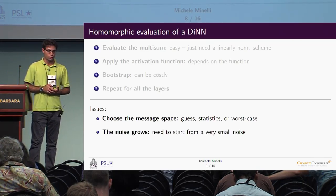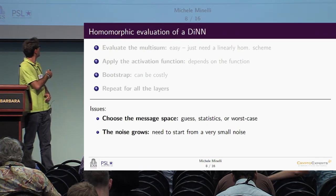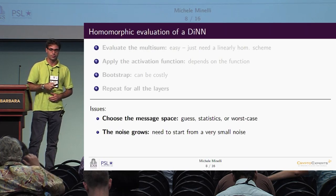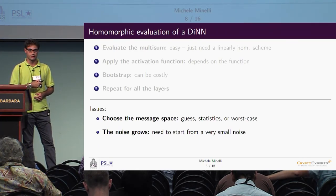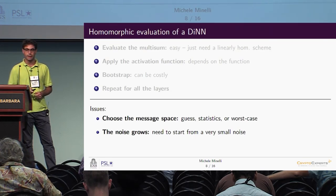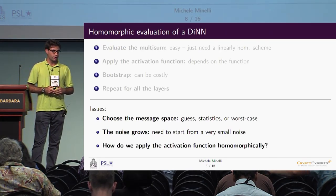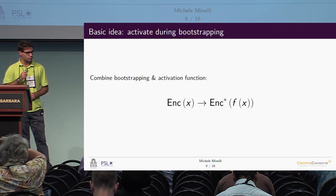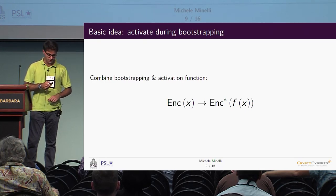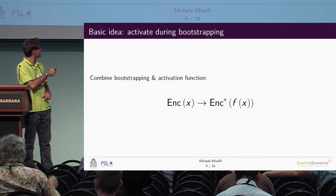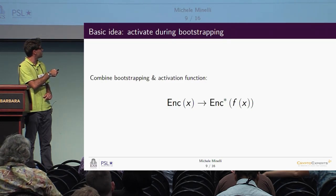Another issue is that noise grows with homomorphic operations. We have to start from a very small noise, because even just computing the multisum involves homomorphic operations that make noise grow. To maintain security even with small noise, we have to compensate by using larger parameters for the encryption scheme. The main question is how to apply the activation function homomorphically — the basic idea is to activate while applying the bootstrapping procedure, moving from an encryption of value x to a refreshed encryption of f(x).